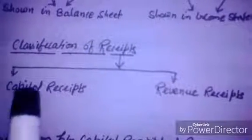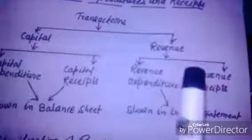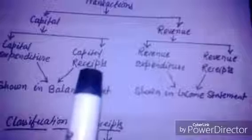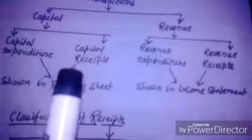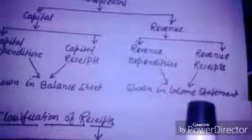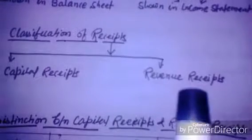Today we will discuss the classification of receipts. Transactions can be of two types of nature: capital nature and revenue nature. Capital nature can be subdivided into capital expenditures and capital receipts, which are shown in the balance sheet. Revenue nature covers revenue expenditures and revenue receipts, which are shown in the income statement. For convenience, receipts are classified into two types: capital receipts and revenue receipts.